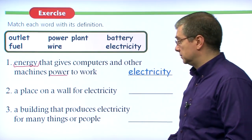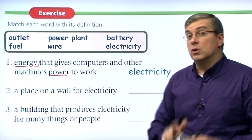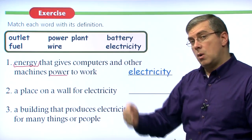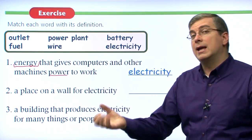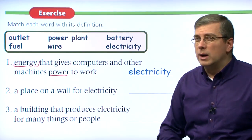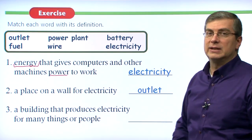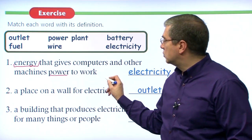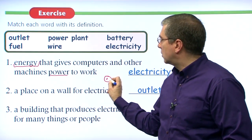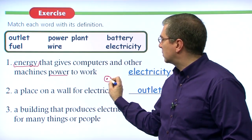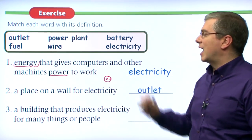Number two: a place on a wall for electricity. In your house, on the wall, there is a place where you plug a cord in to get electricity. It is called an outlet. It has two holes — you plug a cord in. That is your outlet.